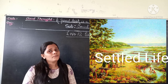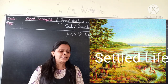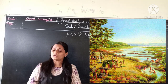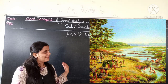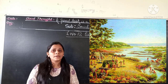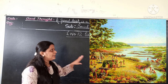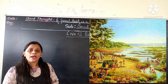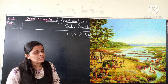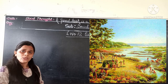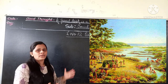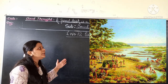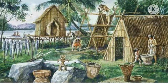So students, can you tell me where did early humans settle their life? They settled their life near rivers. Why did early humans settle their life near rivers? Because the land near the river is fertile and very soft. And in fertile land, it is very easy to grow crops. And also they can get water for farming from the rivers. So these early humans settled down near the river.